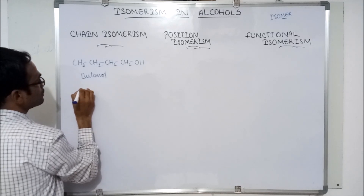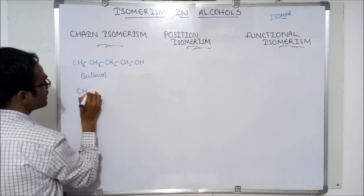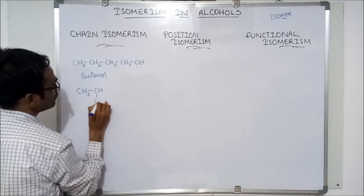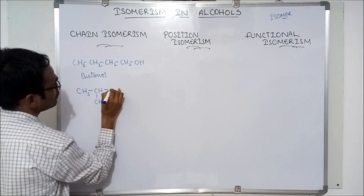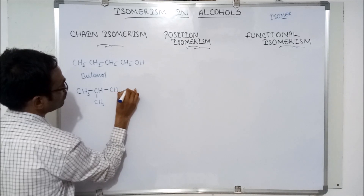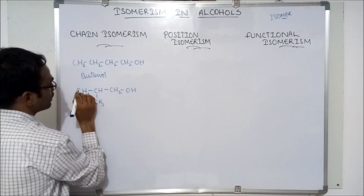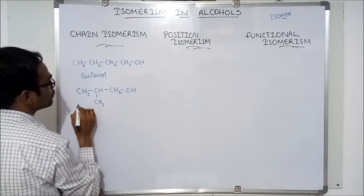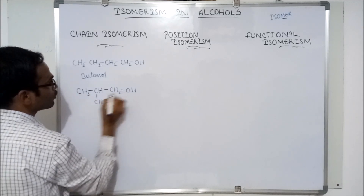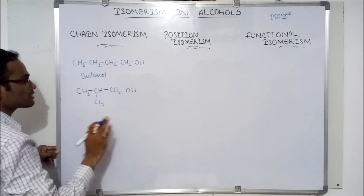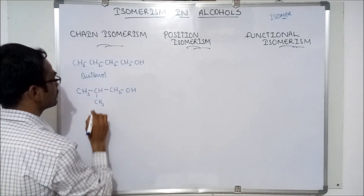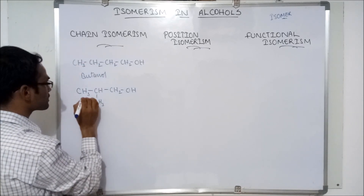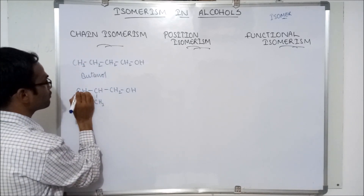Now see this: CH3-CH(-CH3)-CH2OH. In this, 4 carbons are there and a hydroxyl group is there. In the first structure also, 4 carbons are there and a hydroxyl group is there. So the molecular formula is the same, but the main chain position is different.